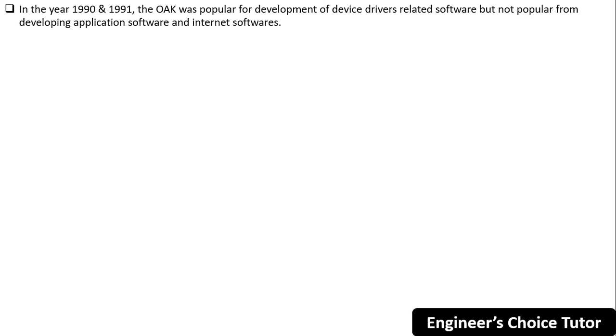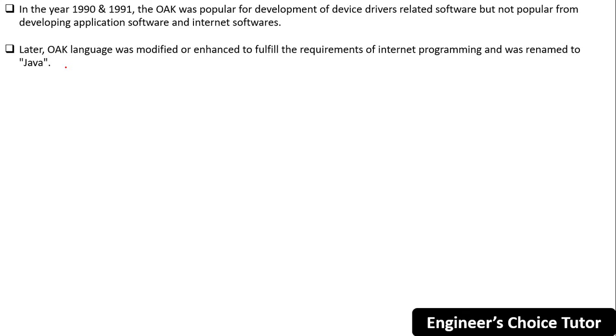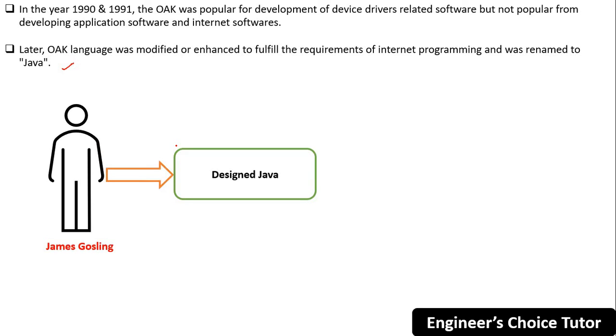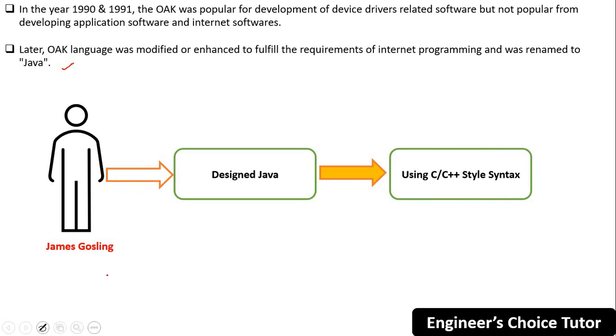In 1990 and 1991, Oak was popular for development of device driver-related software, but not popular for developing application software or internet software. Later, Oak was modified and enhanced to fulfill the requirements of internet programming and was finally renamed to Java. Gosling designed Java with a C and C++ style syntax.